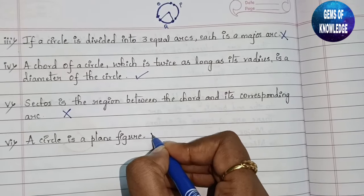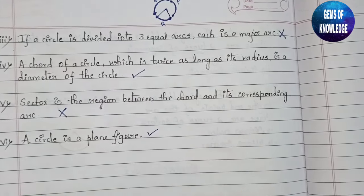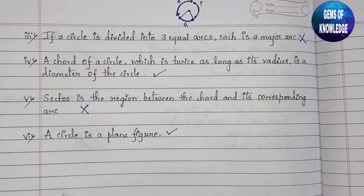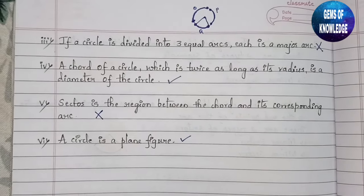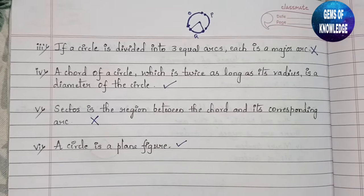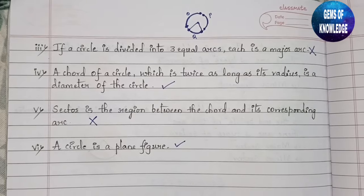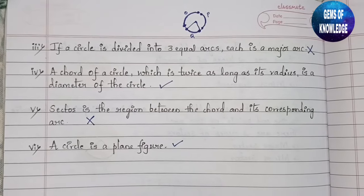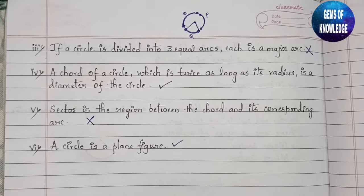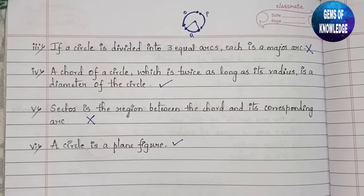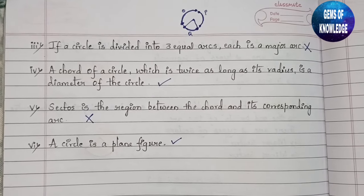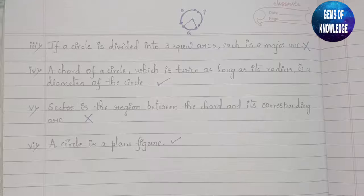Last one: a circle is a plane figure — is it true? Yes, a circle is obviously a plane figure; it is not a 3D figure. I hope you understood the introduction and Exercise 2.1. I'll be back soon with the next exercise, so stay tuned. Don't forget to like, share, and subscribe. Thank you.